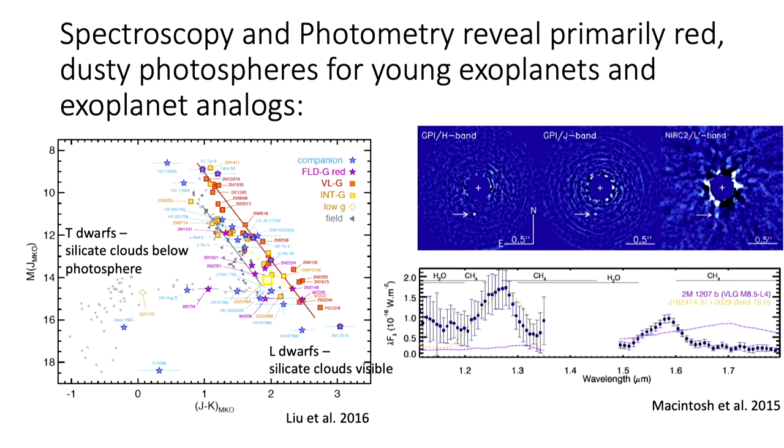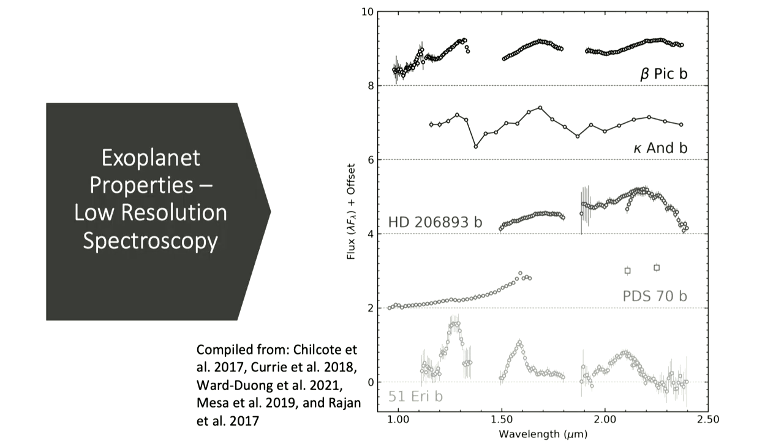You can see 51 Eri b's T-dwarf nature exactly in its spectrum with this methane absorption feature. It's the coolest planet we've imaged to date as a companion. We don't just have photometry — we have low-resolution spectroscopy for many of these planets. Here is a selection going from an early L-type planet to our one T-dwarf planet 51 Eri b. We also have maybe an L9 planet now — I'll get to that later.